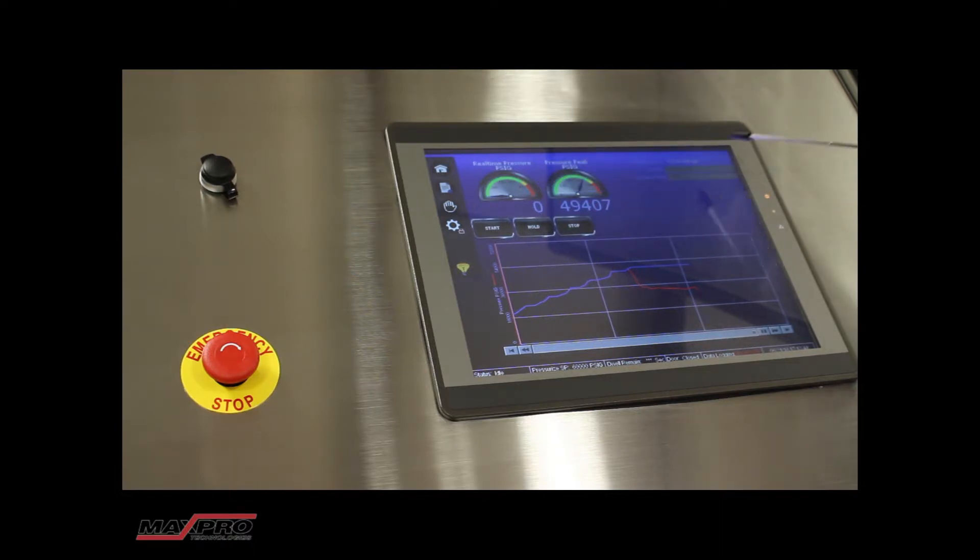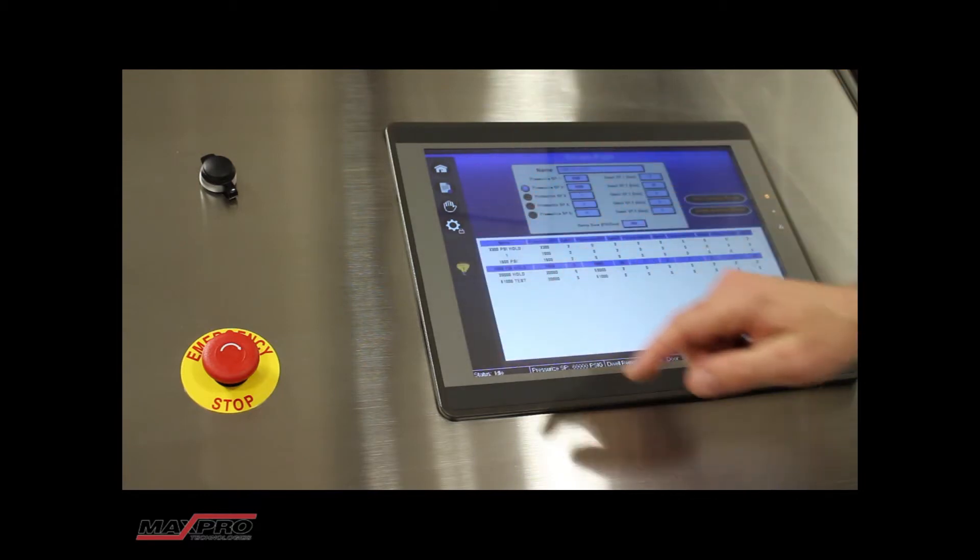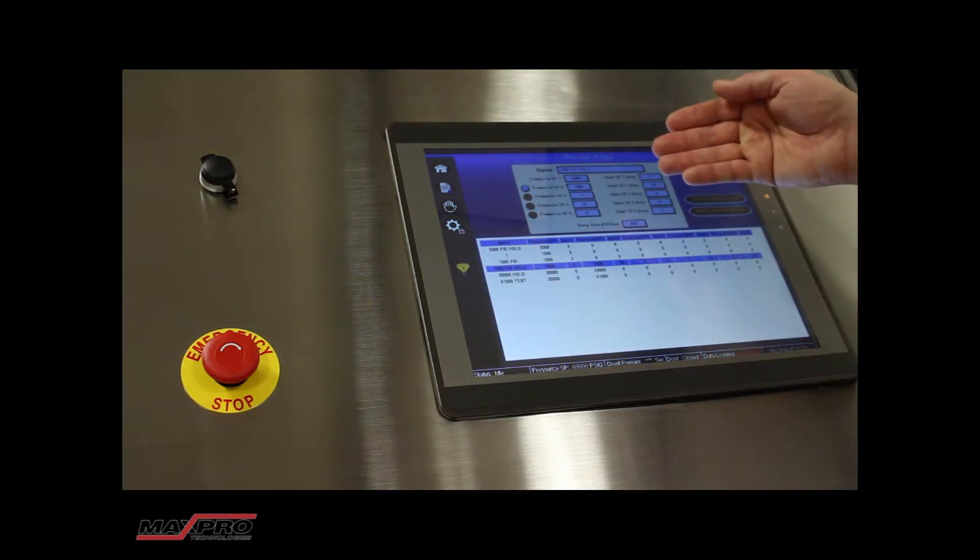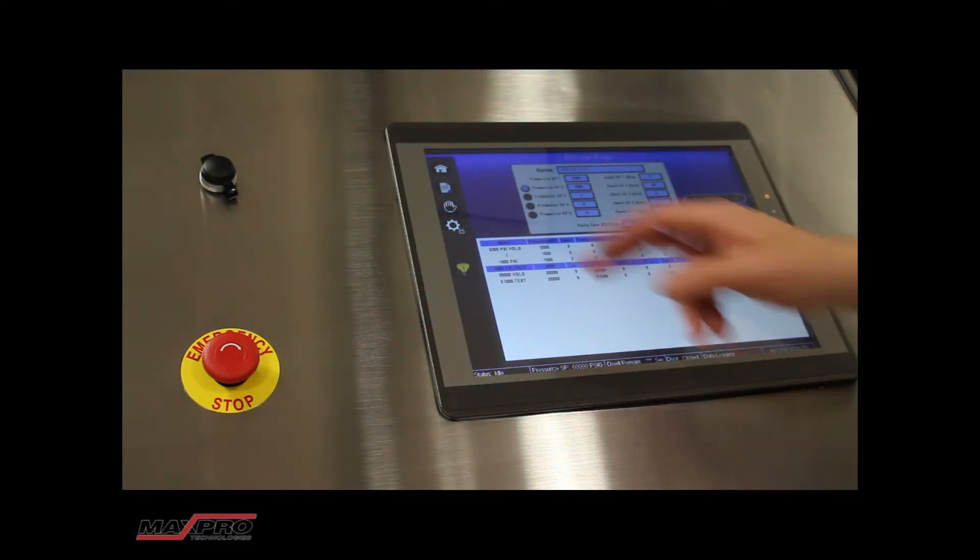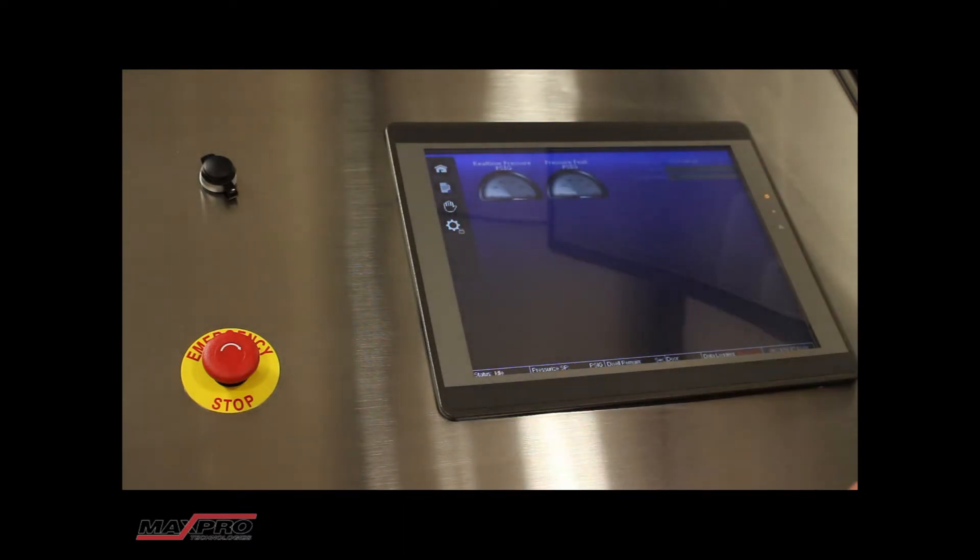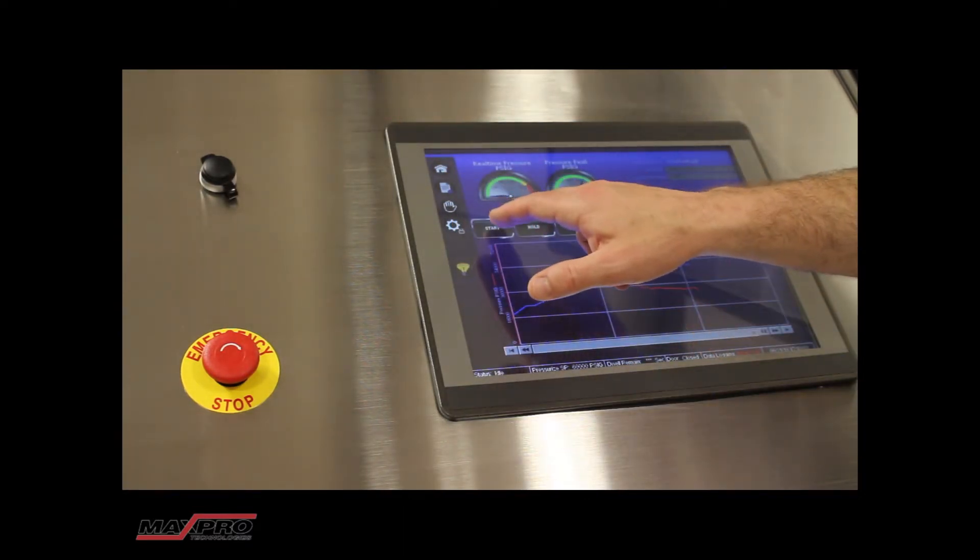The recipe information is up here in the corner. To start your test you would simply click on the recipe screen and you have the ability to set up to five different ramp and hold rates to a maximum pressure of 60,000. Once you've entered your test parameters in there click back on the home screen and simply hit start.